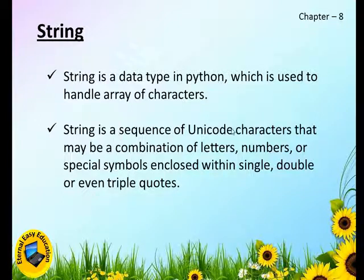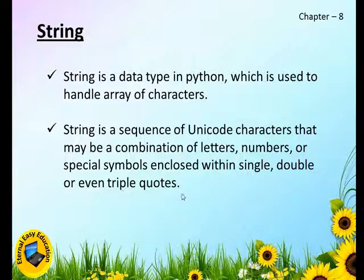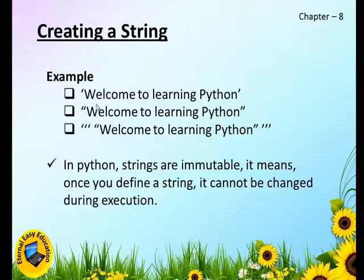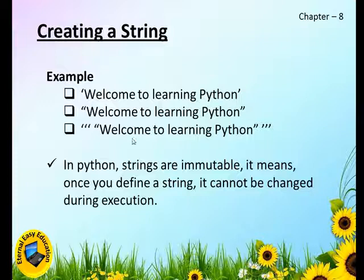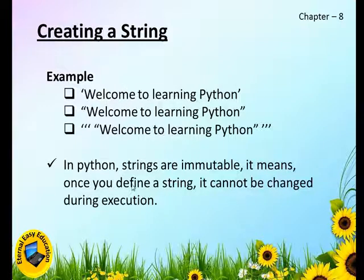So a string is a sequence of Unicode characters that may be a combination of letters, numbers, or special symbols, enclosed within single, double, or even triple quotes. Examples: 'welcome to learning Python' is within single quotes, another within double quotes, and another within triple quotes. I'll explain the difference between the three, but all are allowed in Python. Let's see with an example.